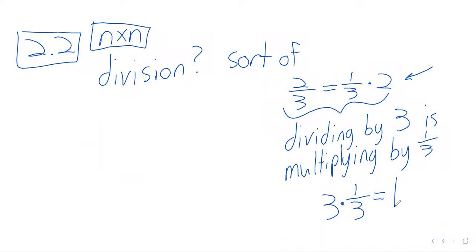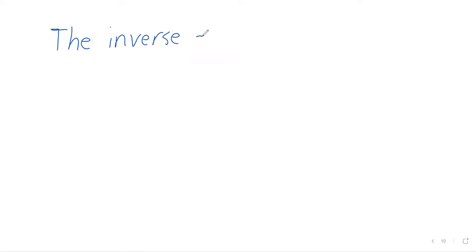Say we want to divide one matrix by another. I should say right up front, we never use that terminology — your textbook will not say anything about dividing matrices. But that is basically what we're trying to do. To think of division in terms of multiplication, as we do with real numbers, we talk about multiplicative inverses. For matrices, we do the same thing, but obviously there has to be some variation.